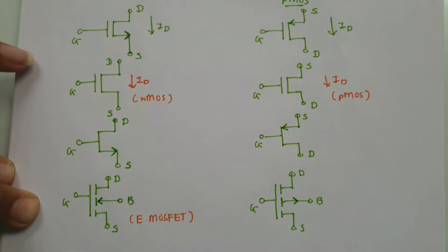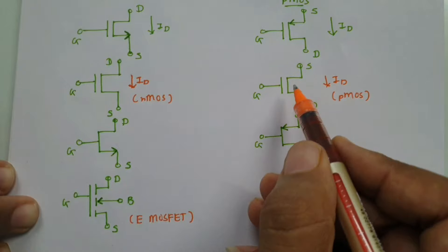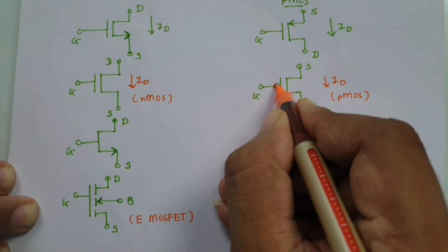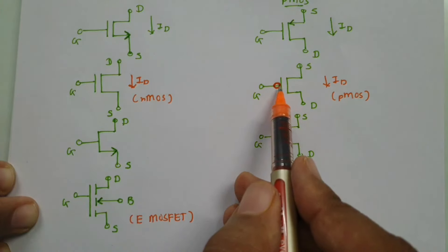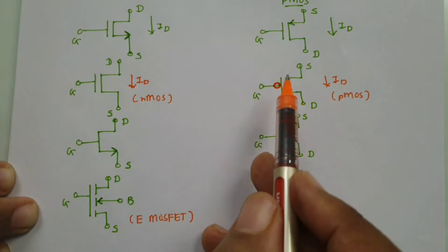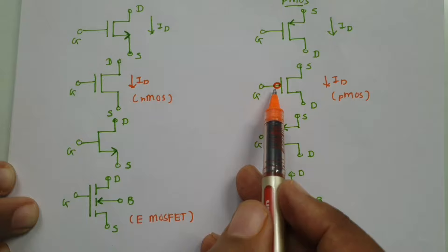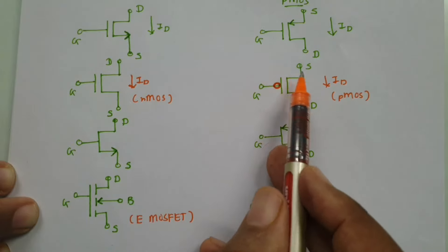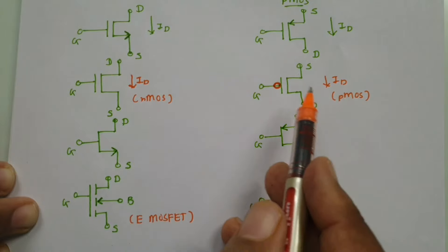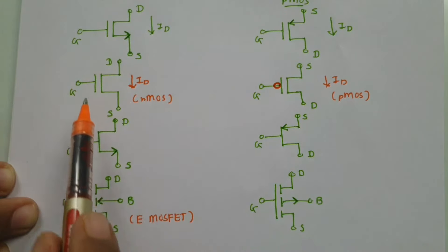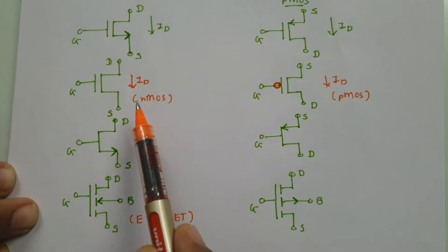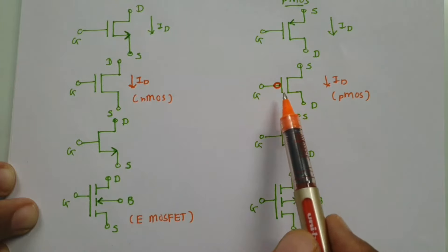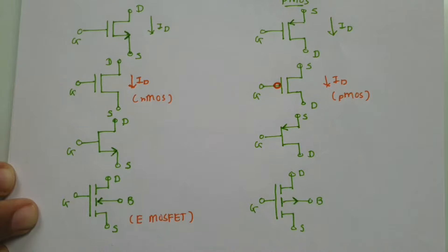One more possibility: if there is no arrow shown but there is a bubble on the gate terminal, that bubble indicates PMOS. So if a bubble is given, you must consider the symbol as PMOS. If no bubble is shown, we can say it is NMOS. Sometimes you won't be given a current direction statement, but if a bubble is shown, we can directly say it is a PMOS symbol.